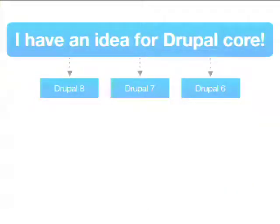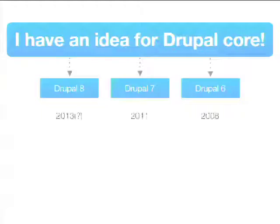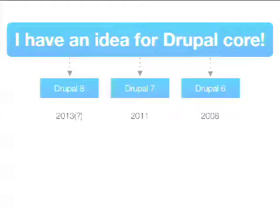It starts with 'I have an idea for Drupal core' or 'I have a problem with Drupal core,' and usually people post something. If there's a problem, they might not say which Drupal core version it is. It's very important to think first about which Drupal version you want to target. If you've been to Dries' keynote, you've seen that the different Drupal versions are at very different parts of their lifetime. Depending on what kind of idea or problem you have, the Drupal community will respond in very different ways.